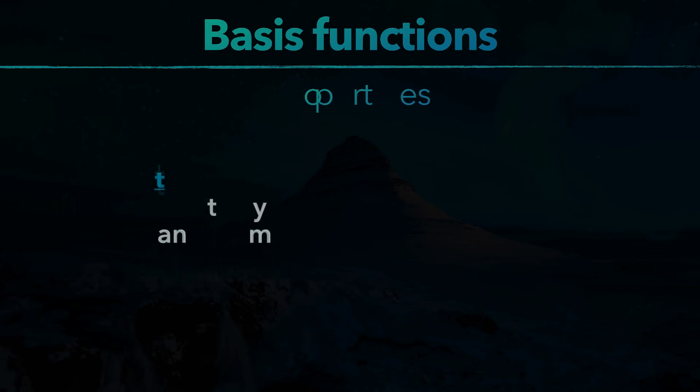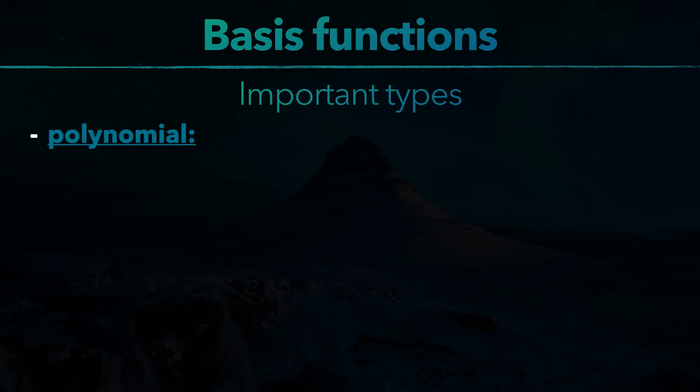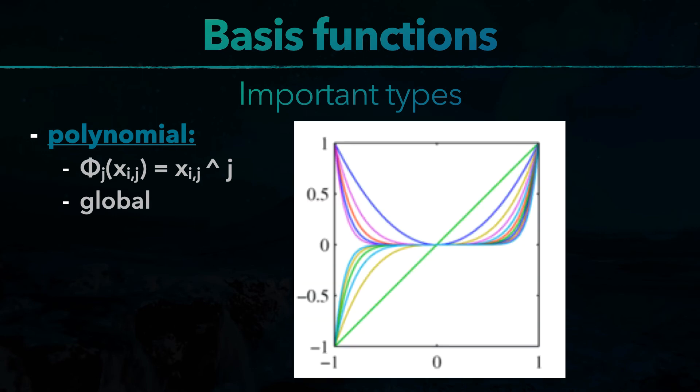There are a few important types of basis functions, which we will see in the following. First of all, the polynomial basis functions. They have the form phi j of xij equals xij to the power of j. They are global and they look like this.